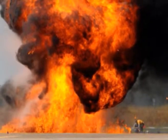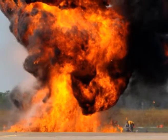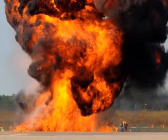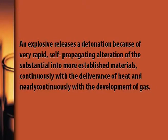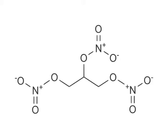The characteristic effect of explosives generally is the consequence of excessive force produced when a solid or liquid is suddenly converted into a much larger volume of gas, and the operative volume of this gas is significantly enlarged by the extensive consequence of the heat released concurrently. An explosive releases a detonation because of very rapid self-propagating alteration of the substance into more established materials, continuously with the deliverance of heat and the development of gas. An explosive may be a chemical compound like nitroglycerin or TNT, or a mixture of both, namely amatol. An explosive may be of any form: solid, liquid or gas.